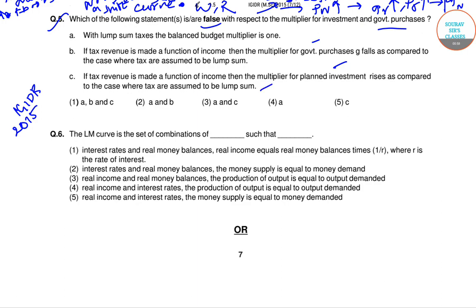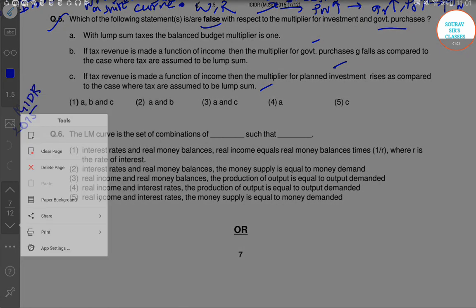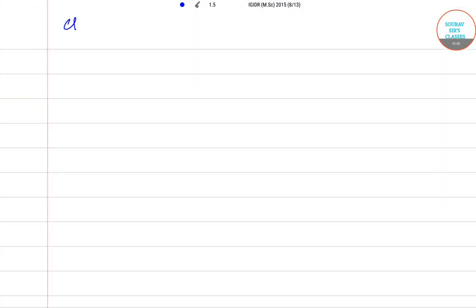So first I want to solve it by generally solving it. So suppose it is a closed economy.